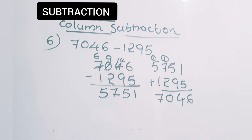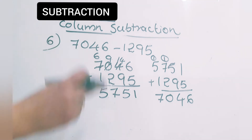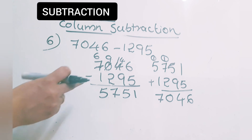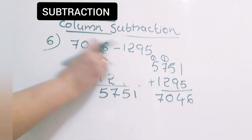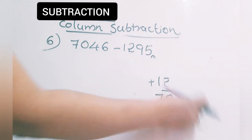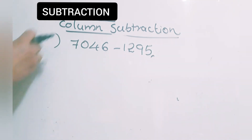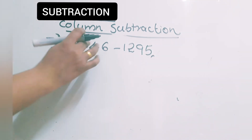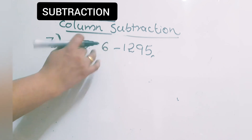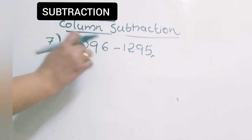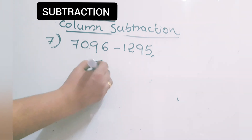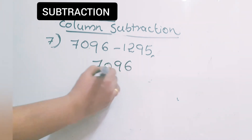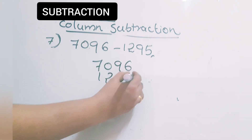Now I am giving a number which is almost the same but with a small difference. Question number 7: same number but instead of 4 I am giving 9. So: 7,096 minus 1,295.